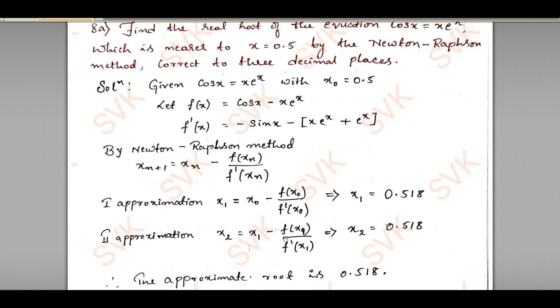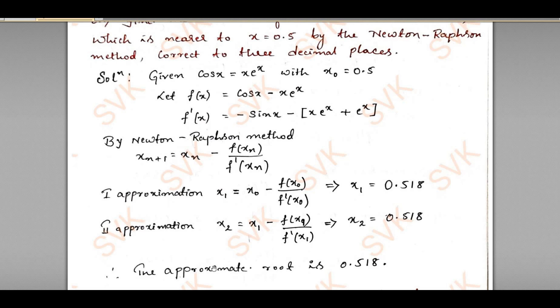Similarly, x₂ will be equal to x₁ minus f(x₁) divided by f'(x₁). I got x₂ as 0.518. As I got both the approximations as the same value, I am going to stop the iteration. Then I will define that the approximate root for the given problem is 0.518. This is analytically the root.